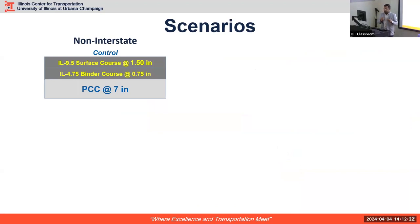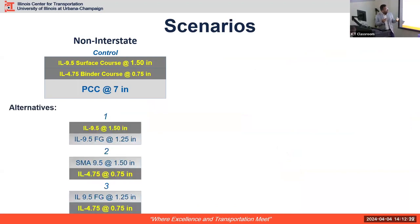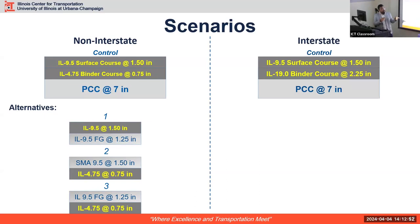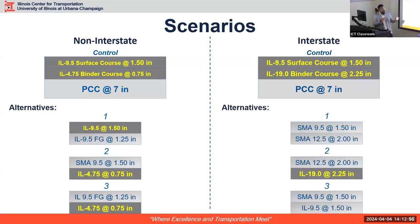For test scenarios, the control scenario is what is commonly used right now in Illinois. We came up with three alternatives after discussion with IDOT and a survey of how other states approach this problem. We considered keeping polymer-modified binders — PG 12.75 — for binder courses, and a stronger surface course such as SMA 9.5. The alternatives include scenarios with different thicknesses and materials like SMA 9.5 and SMA 12.5, some at lower thickness than the control but with stronger materials.